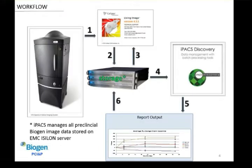Here's a brief overview of the workflow we've developed. We are using an IVIS Spectrum instrument, which we upgraded last year. Step one: we acquire our data on the IVIS instrument using Living Image software. Step two: the data is stored onto a local EMC Isilon server — as we acquire the data, it's stored right onto that server. Step three: once acquisition is complete, we go back to our desk for analysis using Living Image, which is then also stored back onto the server. Step four is a sync to the IPACS — this sync is set up automatically every 24 hours overnight, ensuring anything stored on the EMC Isilon server is always managed within the IPACS environment.